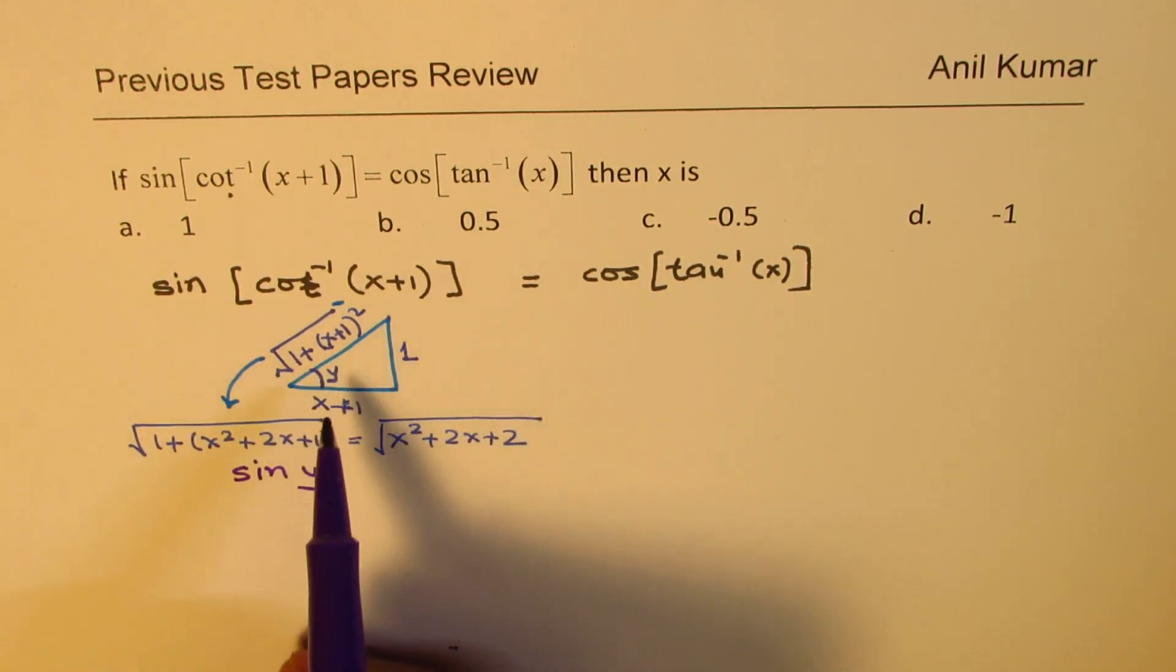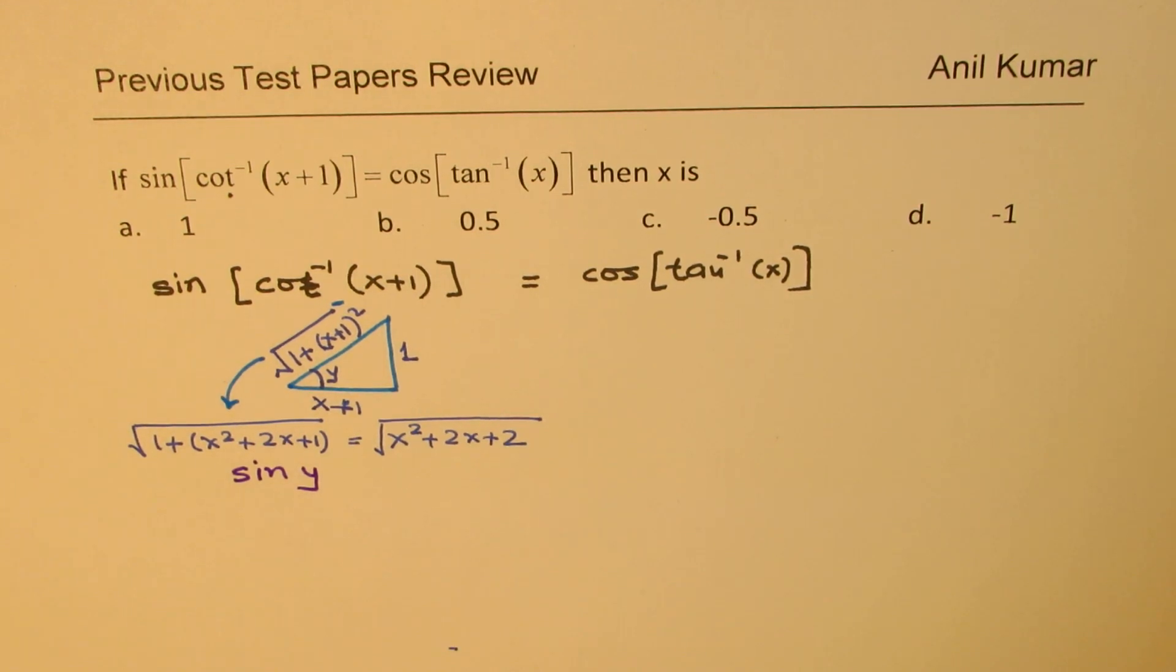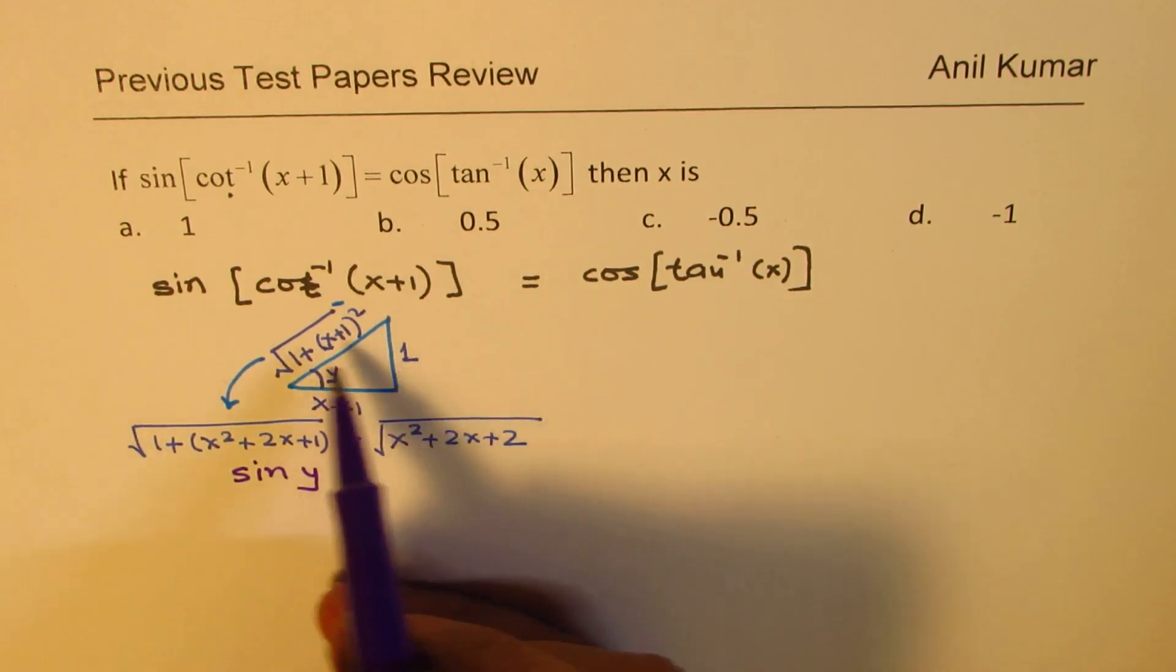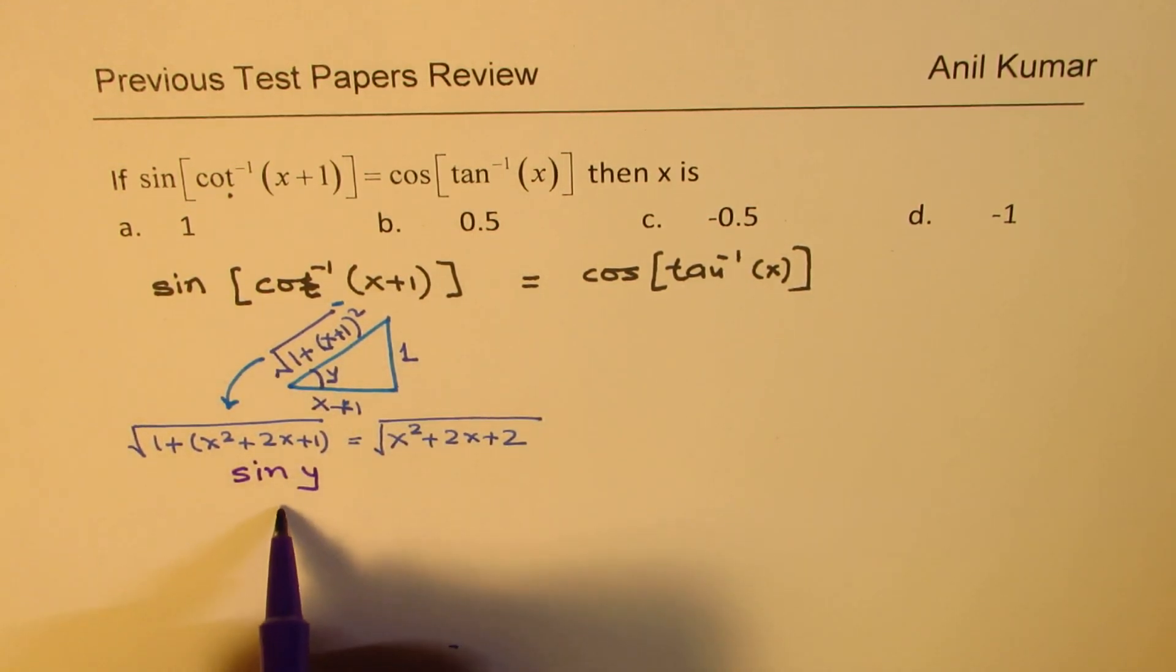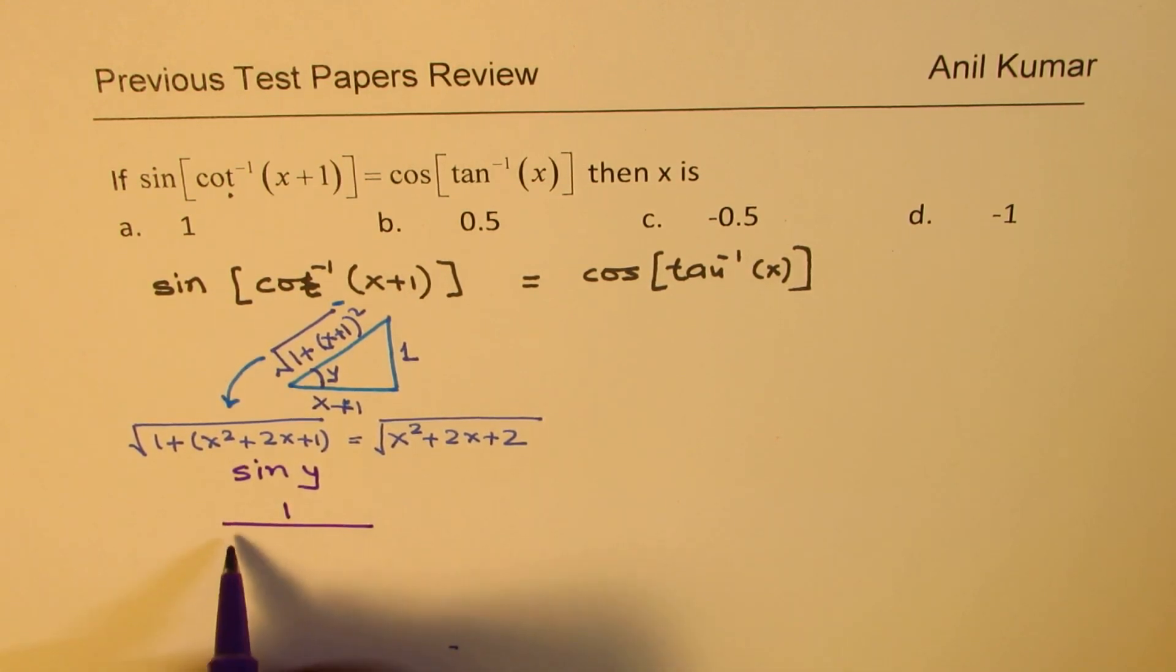So in this particular triangle, what is sine of y? Well, sine is 1 over the hypotenuse. So this value is basically 1 over square root of (x squared plus 2x plus 2). So we get our left side.